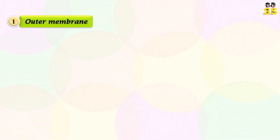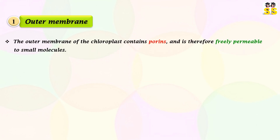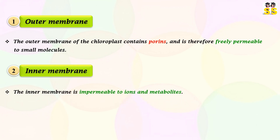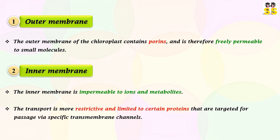Let's outline the structural composition of chloroplasts, which includes the outer membrane. The outer layer of the chloroplast contains porins and is therefore highly permeable to small molecules. In contrast, the inner membrane is impermeable to ions and metabolites. Transport is more restricted to certain proteins that can enter chloroplasts via specific membrane transporters.